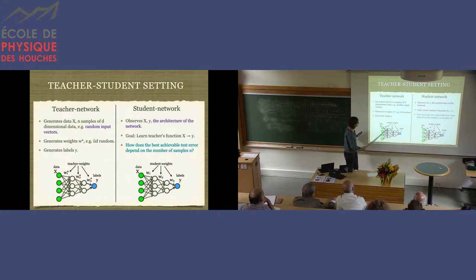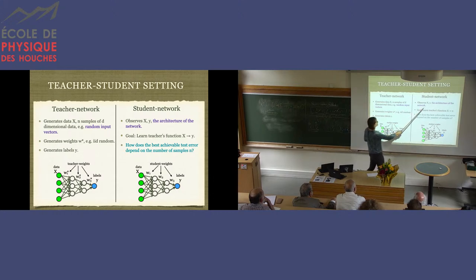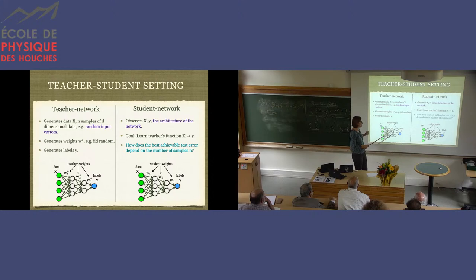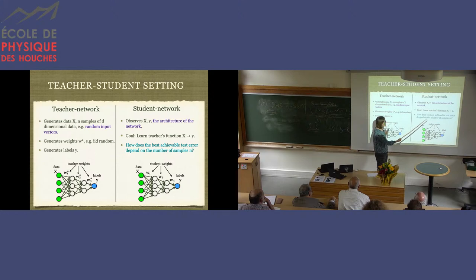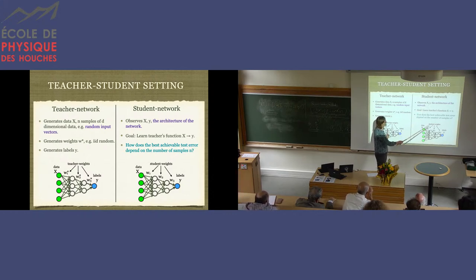And then it has some architecture. It has some weights that we also, for instance, choose at random. And this teacher neural network outputs labels. And then we collect these labels and the inputs and give it to the student network. And we can also give to the student this picture, but we don't give to the student the values of these matrices W, okay? And the goal of the student is to take this data, the architecture, and learn the same function. The goal of the student in this model is kind of the same as before. It's learning the right function, but it doesn't know the values of the weights.